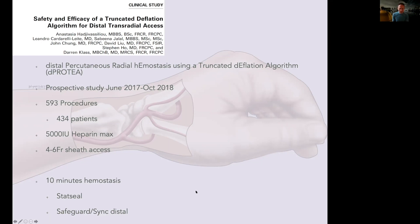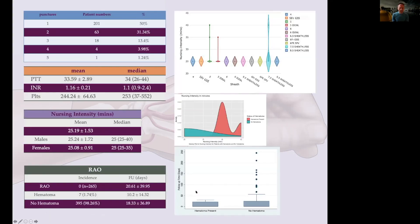The StatSeal is absolutely mandatory in these patients. Some huge benefits and learning points from the study: firstly, you can access the distal radial artery multiple times, as you can with conventional access, if you do hemostasis correctly and you respect the vessel. You can access in patients who are coagulopathic. The nursing intensity was the huge benefit here.